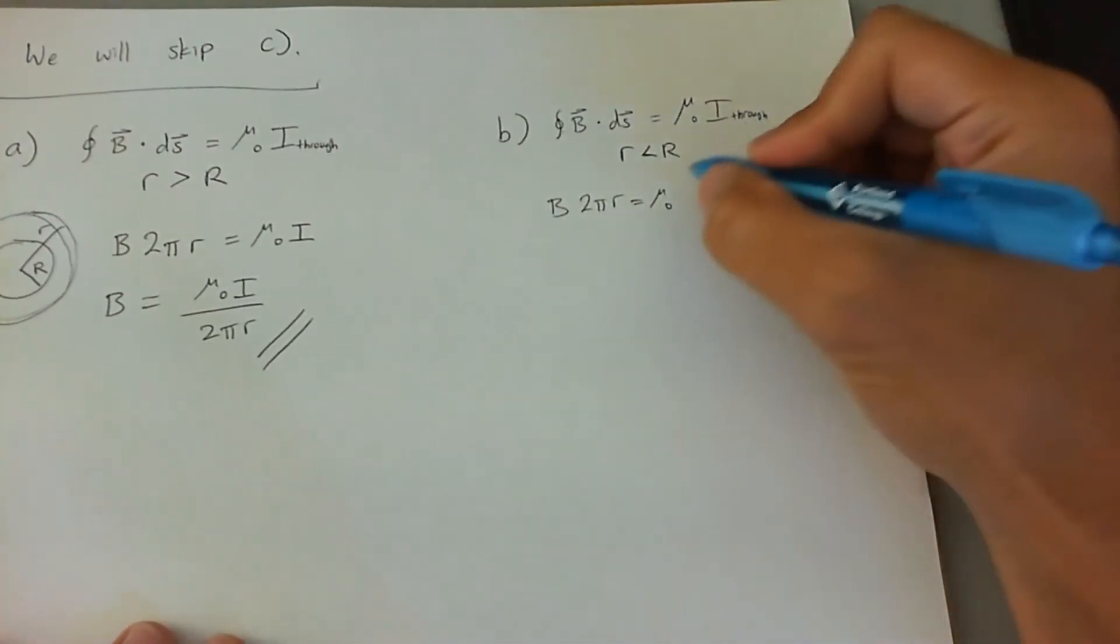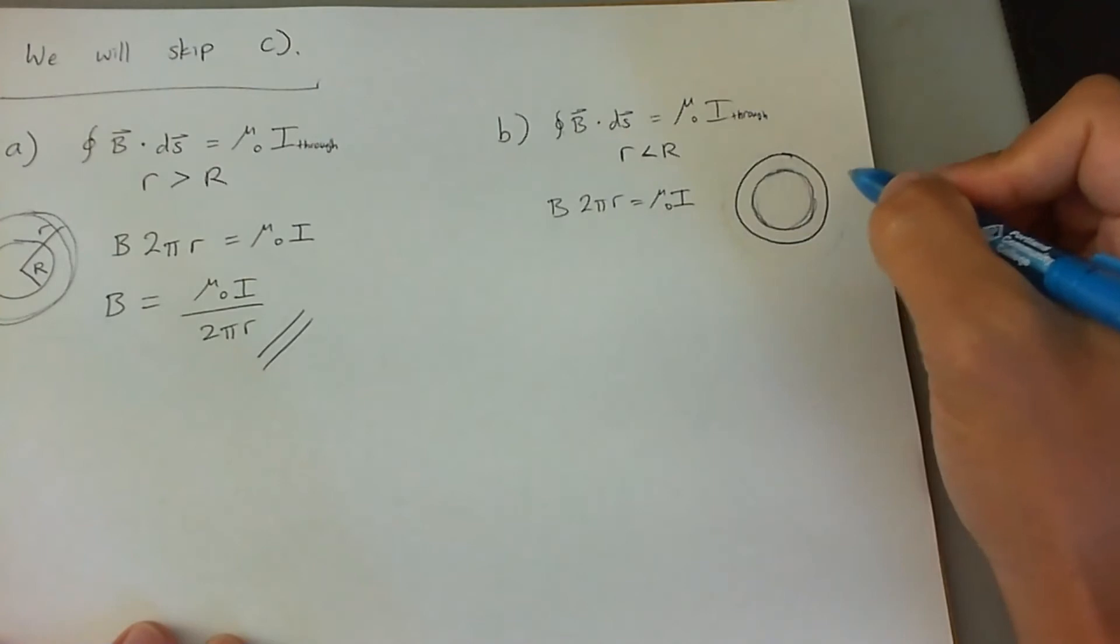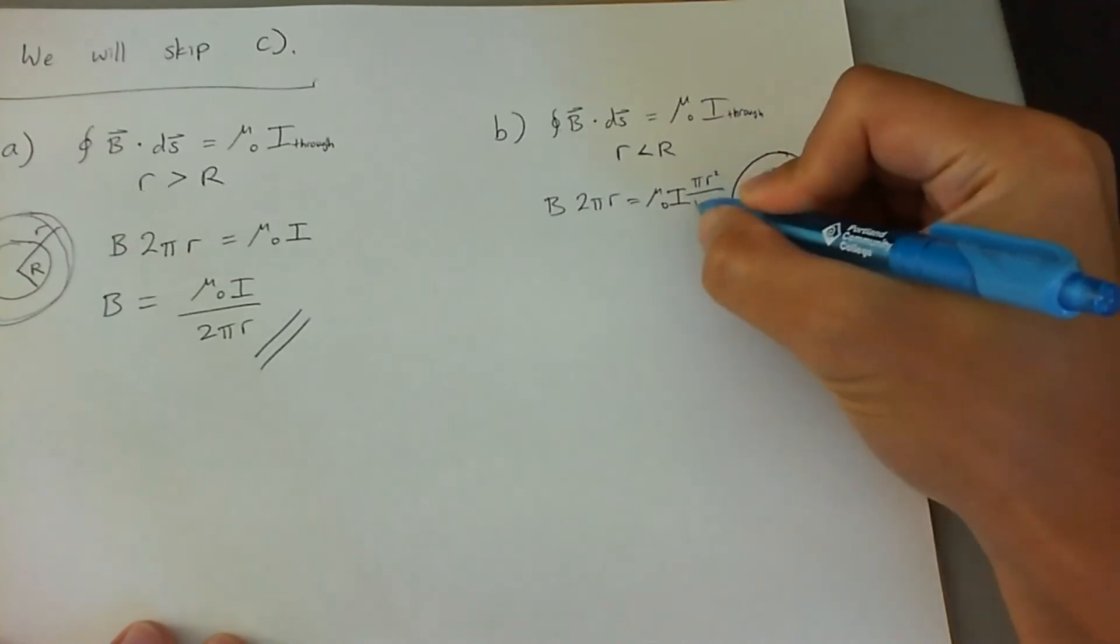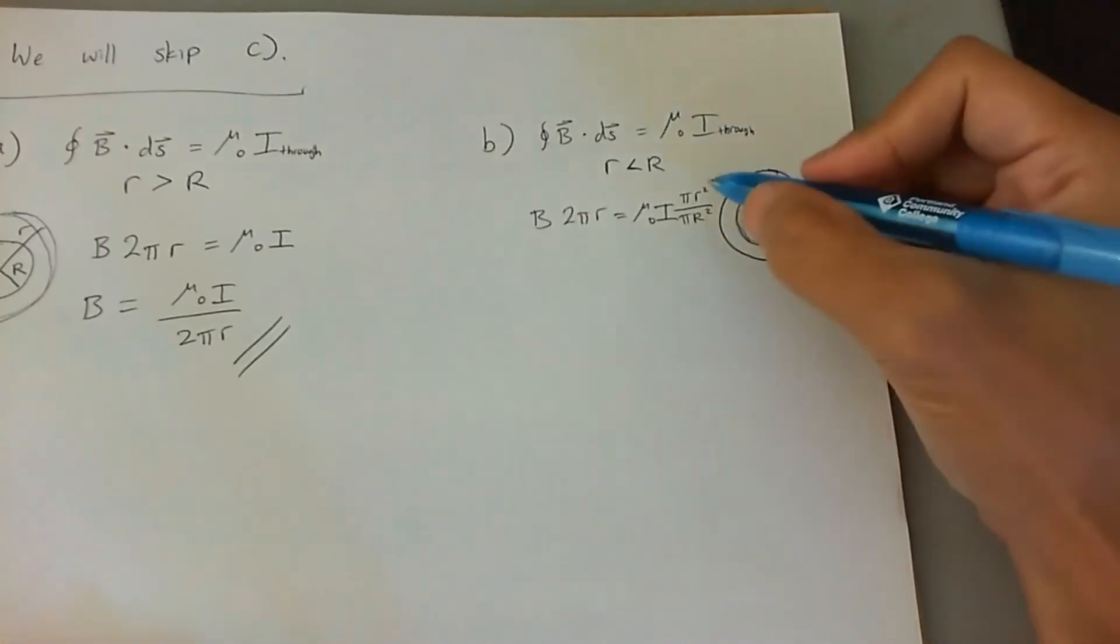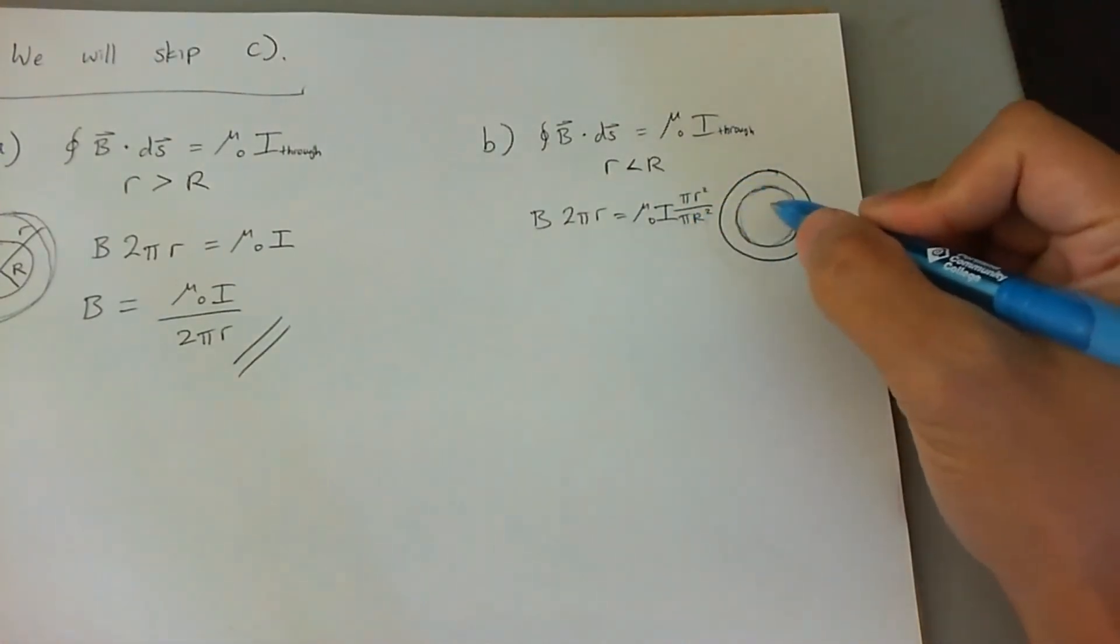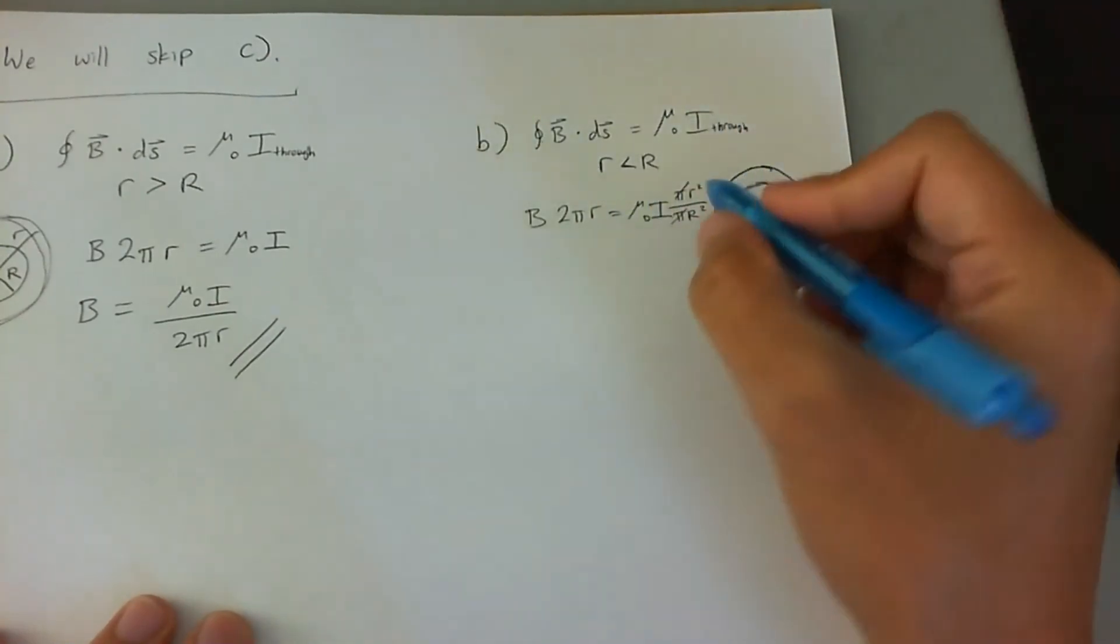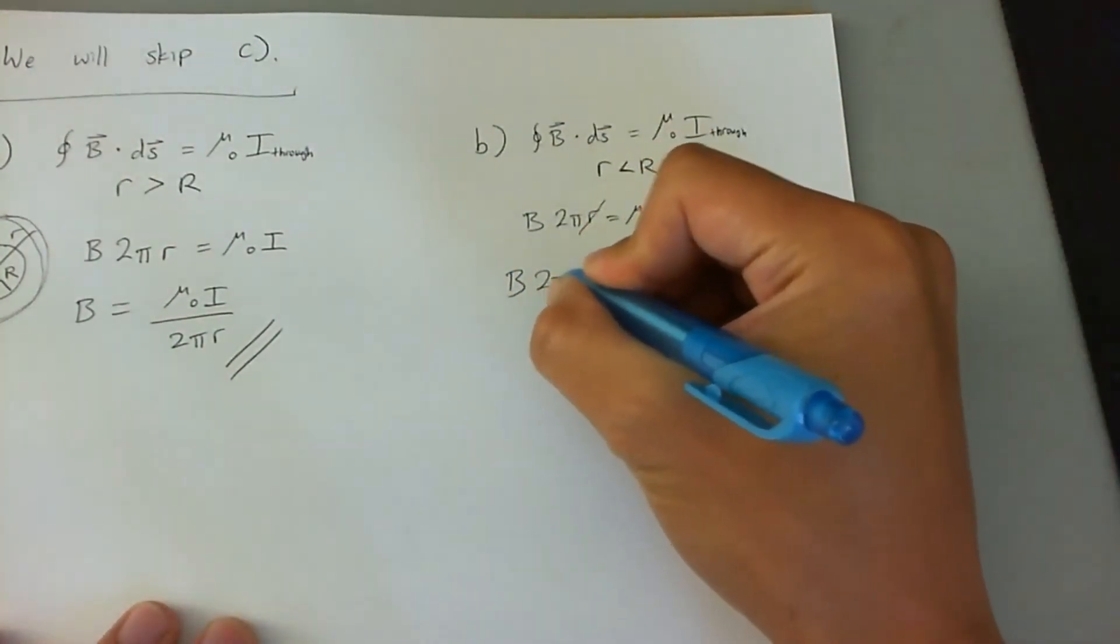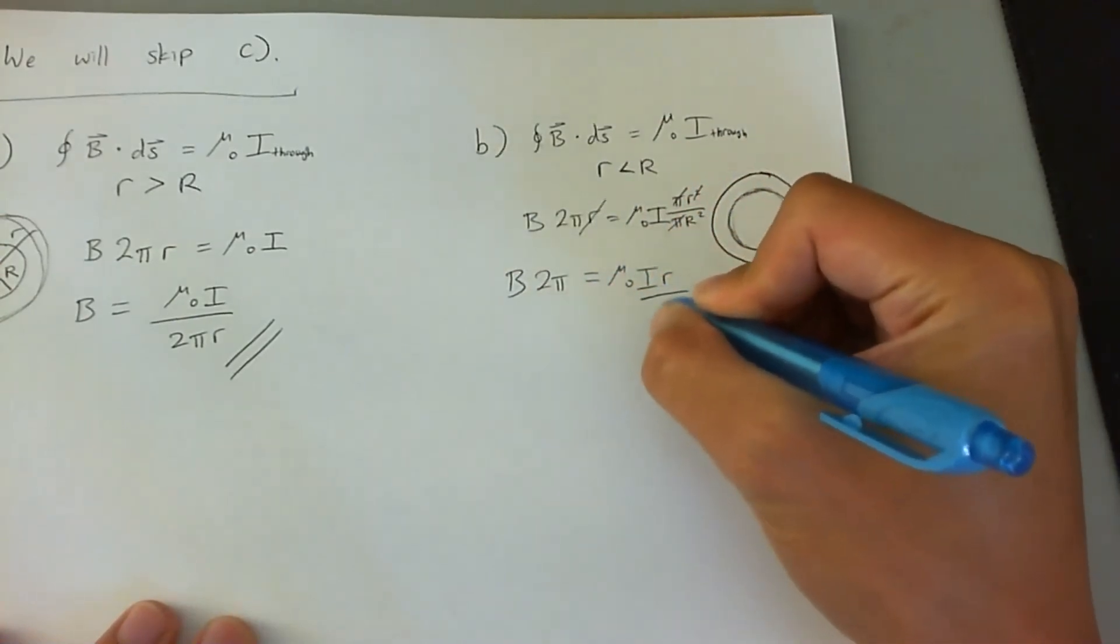So the current going through the Amperian loop is going to be the current going through the entire wire multiplied by the ratio of the area of the little loop by the ratio of the area of the big loop. And this ratio is going to be less than one, which means the current going through this Amperian loop is going to be less than the current going through the entire cylinder. The pis will cancel out, and let's go ahead and cancel one of these r's out with this r here, and we're going to get B 2 pi is equal to mu naught i r over r squared.